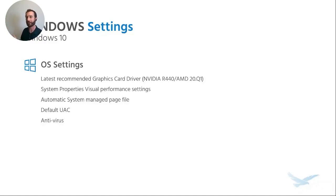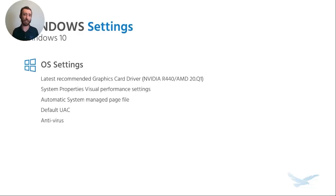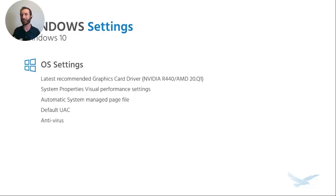Regarding antivirus, SolidWorks used to test a list of 12 or 13 different antiviruses and certify them, but they stopped doing that a couple of years ago — there are too many variables. Their strong recommendation now is simply to work with your IT team, find something that meets your security policies, and if possible, run SolidWorks benchmarks to compare performance between antivirus options before committing. For many of us, our antivirus is already predetermined by IT, so we don't get much say.